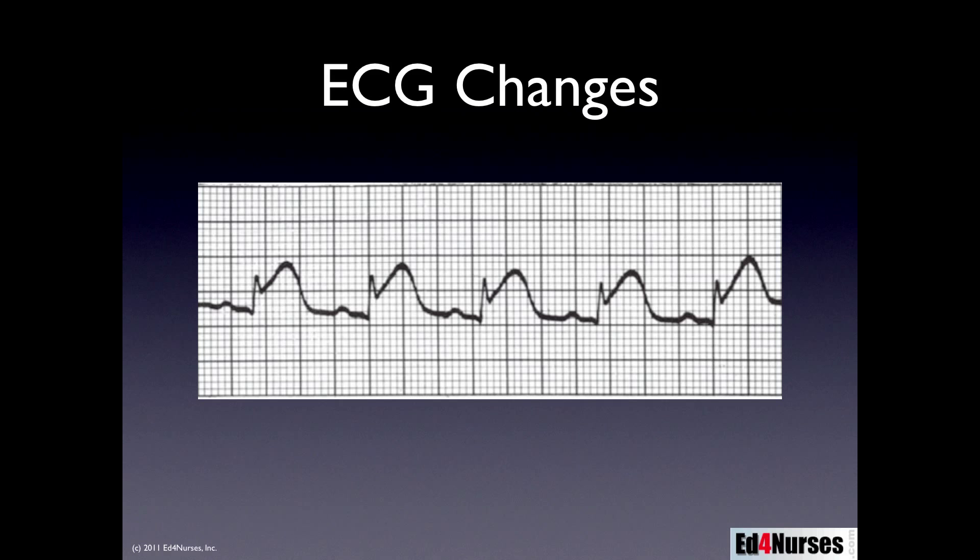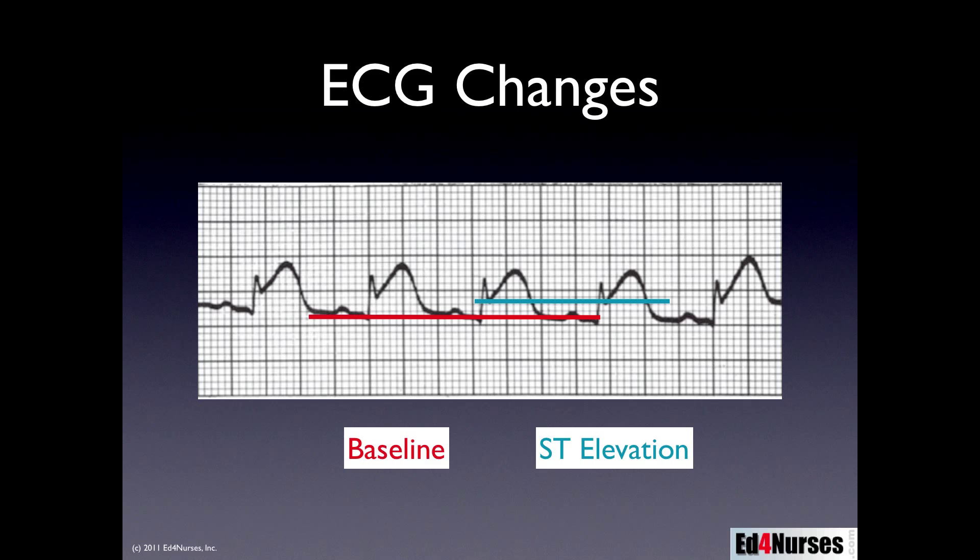Here's an EKG tracing showing a patient who is having ST-segment elevation. To determine ST-segment elevation, we first need to find the baseline — the isoelectric line that all deflections should return to. The P wave comes back to the baseline, but the QRS complex does not come back down to baseline. Instead, those ST segments — shown as a little blue line — are elevated above the baseline, going right off into the T wave. That's what we call ST-segment elevation.